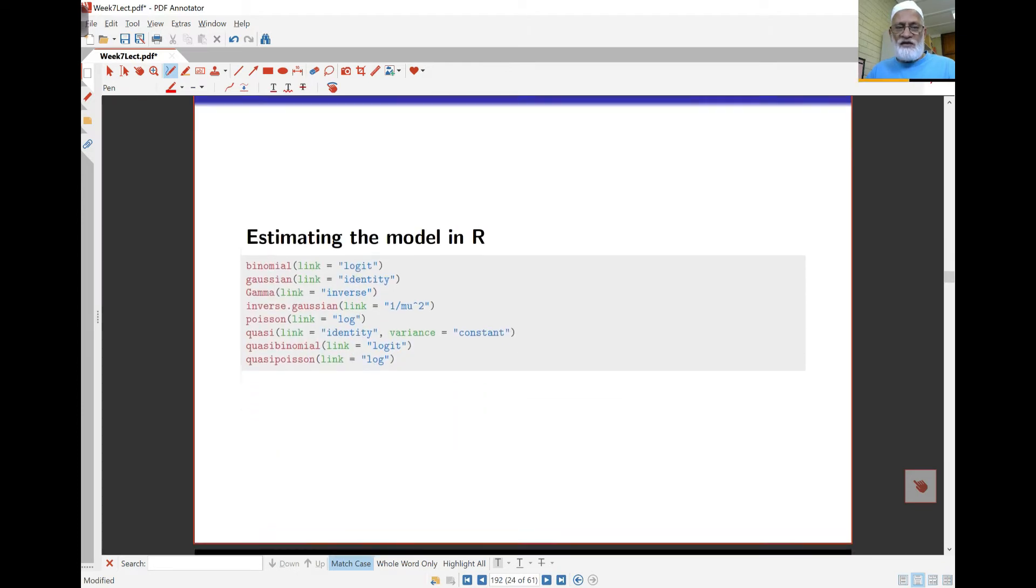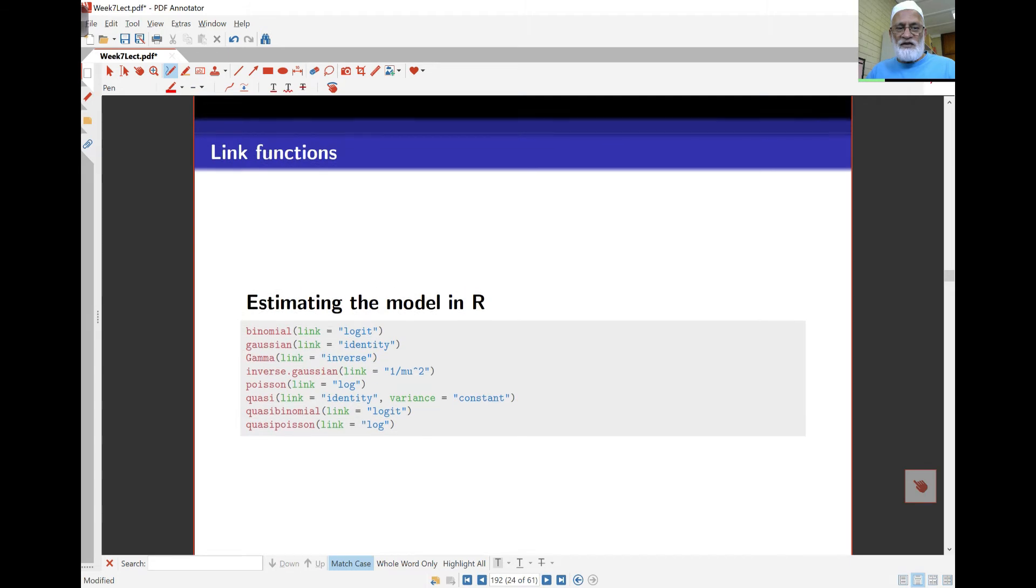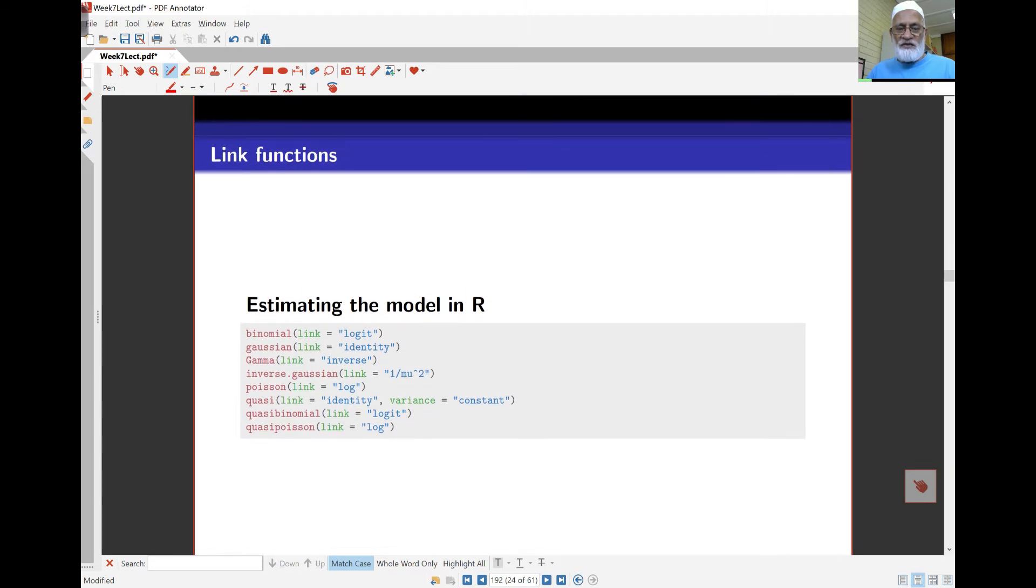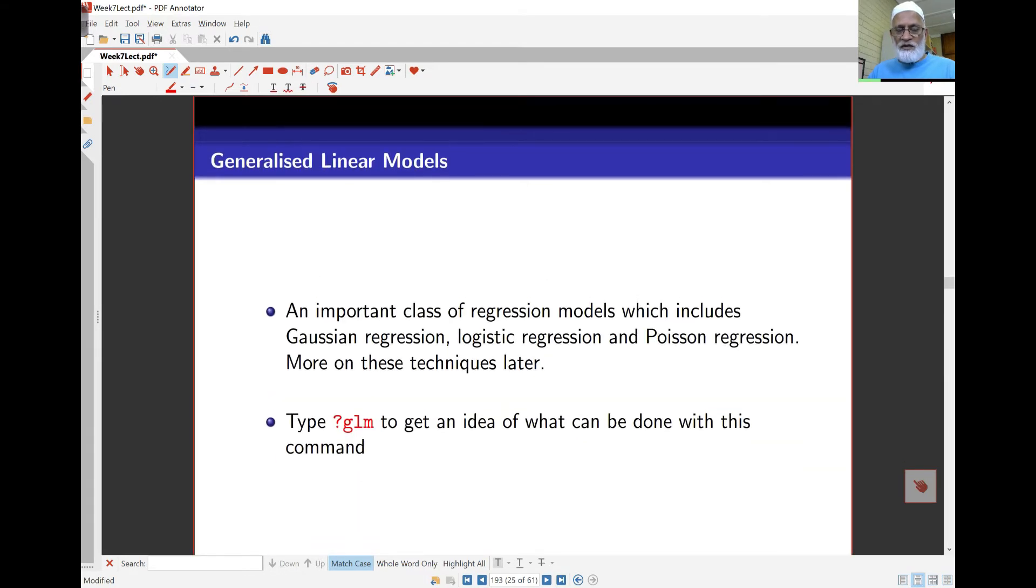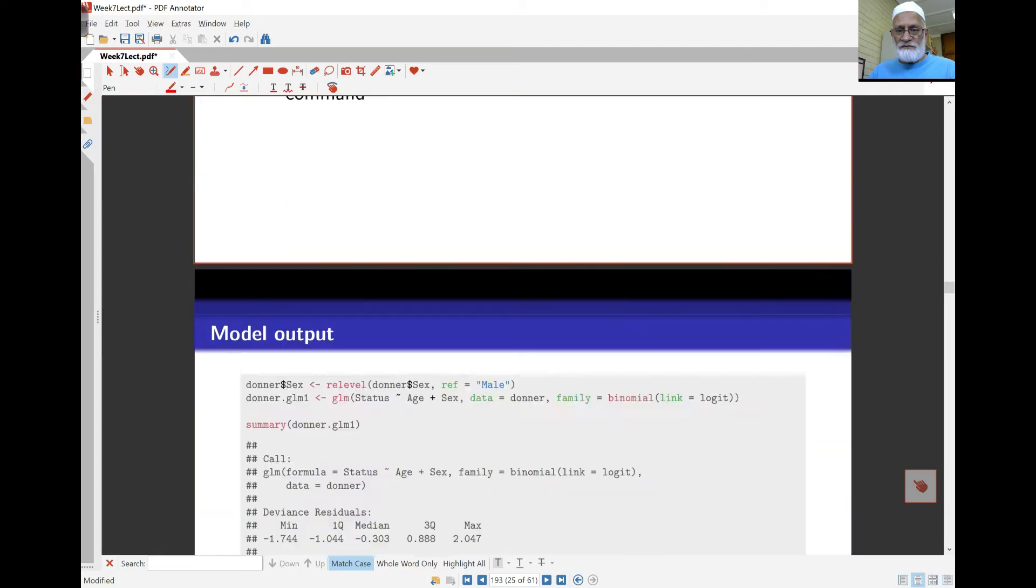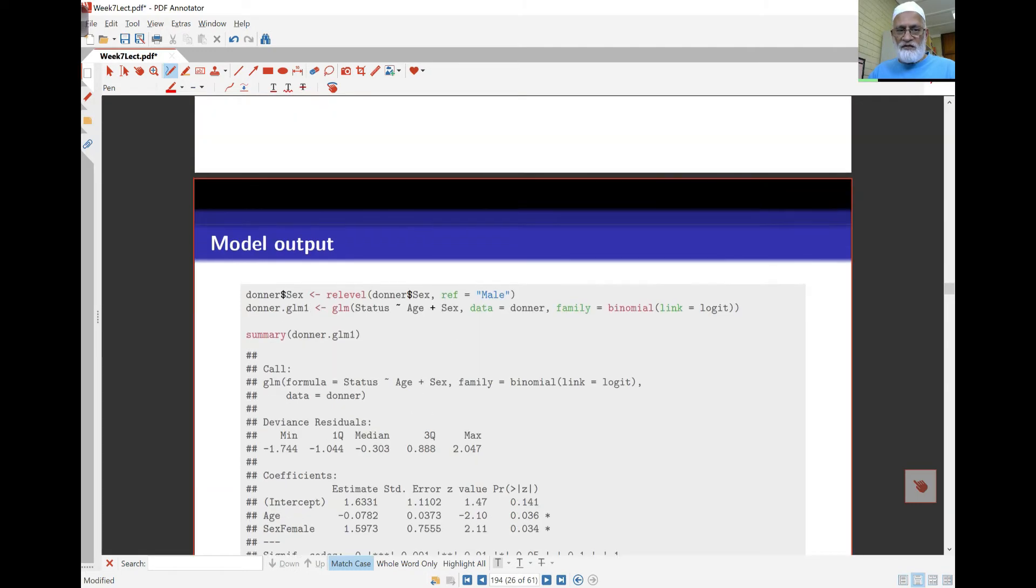There are very many link functions. The link function can be a logit or identity, which is the same as Gaussian, it can be gamma, all those kinds of things. We won't look at many of those, but we'll look at the Poisson one afterwards. This is an important class of models that works with count data and also includes Gaussian data.